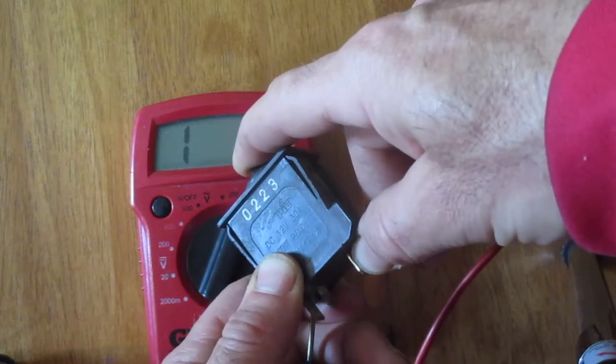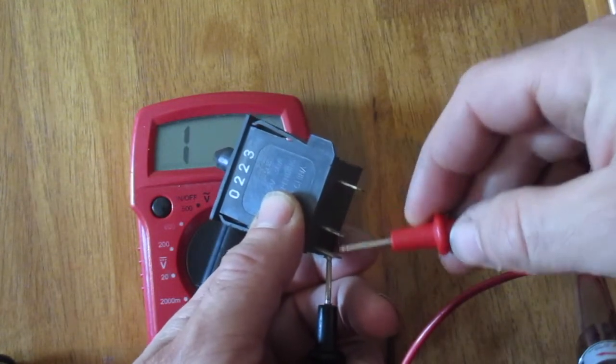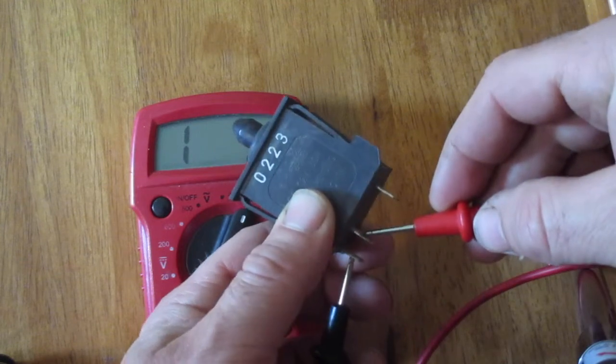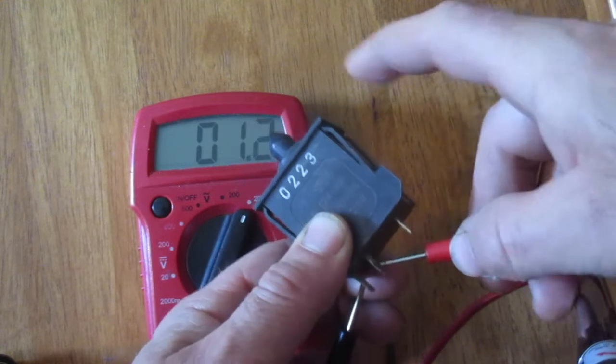And then when I push up on the switch, nothing should happen. Then what we're going to do is touch the two closest tabs here together and we should get a reading of around 1. And I'm getting that.